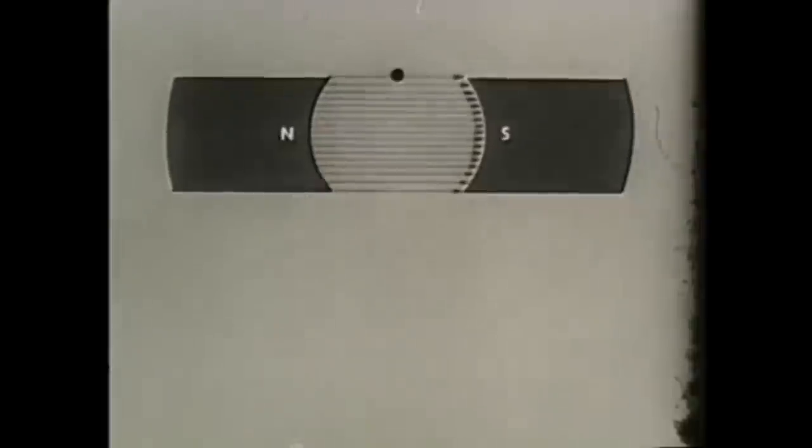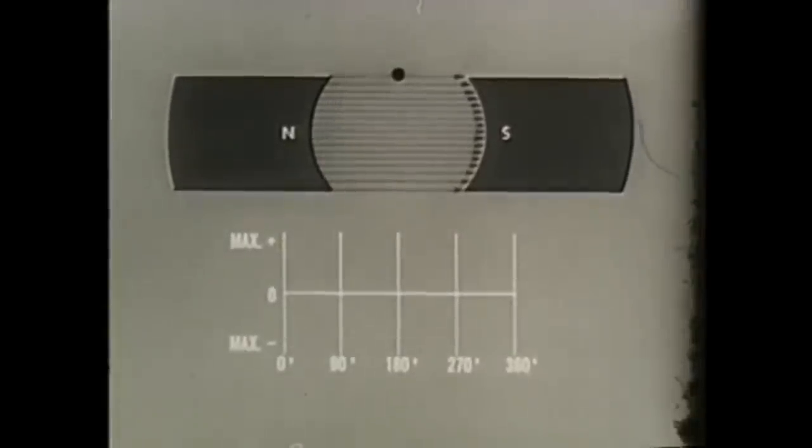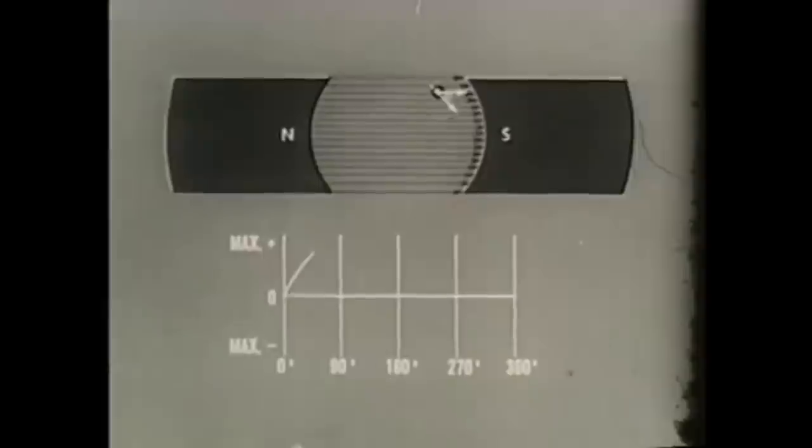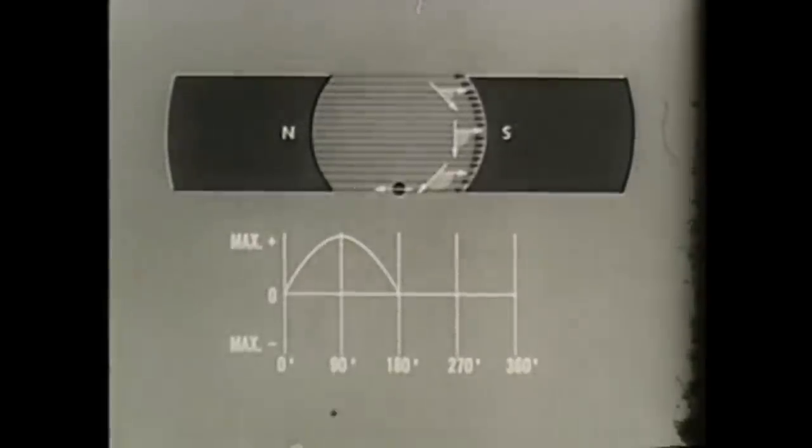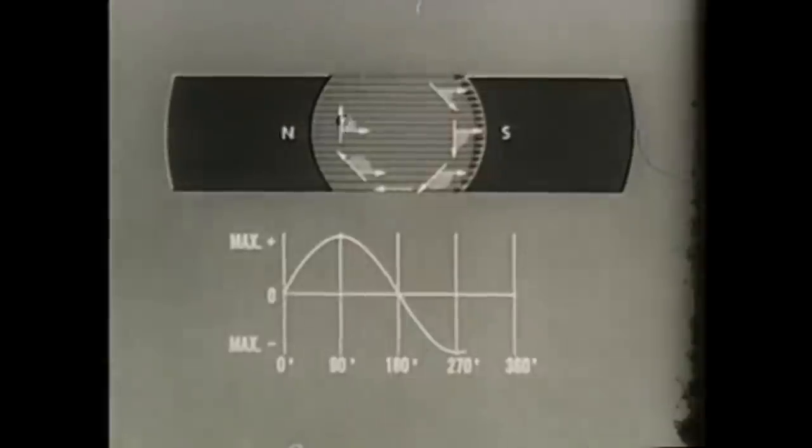A graph of EMF versus conductor position during one revolution will be a sine wave representing alternating current or AC. All rotary generators produce AC internally.